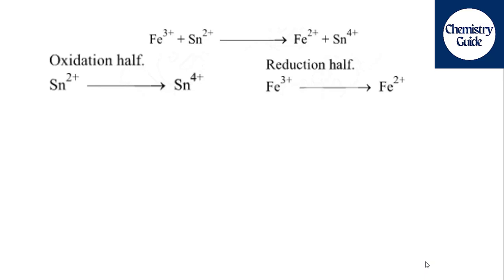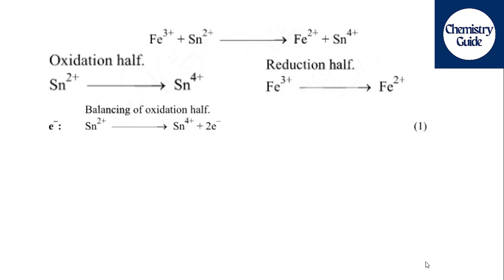In the next step we will balance the oxidation half, where the oxidation state is increasing from Sn²⁺ to Sn⁴⁺. There is a difference of plus two charges, so we need to add two opposite charges — two electrons — on the side which has the higher oxidation state.